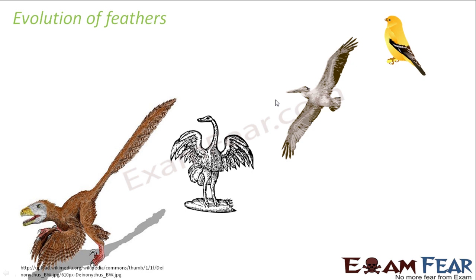Evolution follows the same basic mechanisms: mutation, migration, natural selection, and genetic drift. These four things together actually cause evolution. Because of all such changes, gradually and over a continuous period of time, you see new organisms arising from some old existing different organisms. If you see the dinosaurs and the birds, they are so very dissimilar — we can't even think that birds evolved from some form of dinosaur. But that is actually true. If you look at a feathered dinosaur, you can say it has got some similarity with the bird. This is how the evolution of feathers also took place.